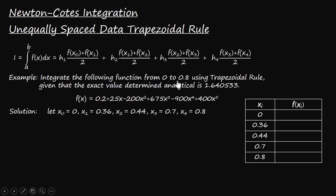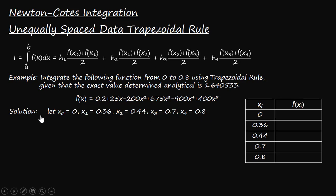We need five data points to divide the interval into four sub-intervals. These are: x₀ = 0, x₁ = 0.36, x₂ = 0.44, x₃ = 0.7, and x₄ = 0.8. The corresponding function values can be seen in the table.